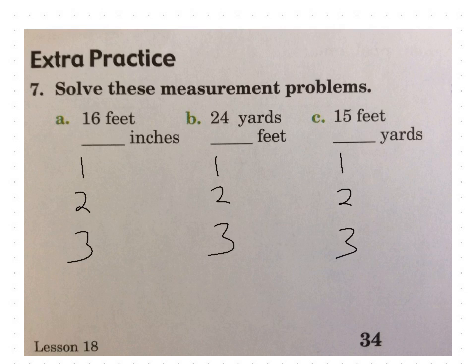We're going feet to inches, so that means we're going larger to smaller. It means we multiply. What number do you think of? When you think of inches and feet, you think of 12 because there's 12 inches in a foot. And now all we have to do is 16 times 12. 16 times 12 is 192. Go ahead and write the 16 times 12 right there, and then write your answer right here, 192.